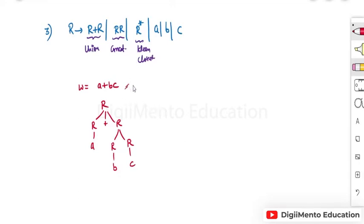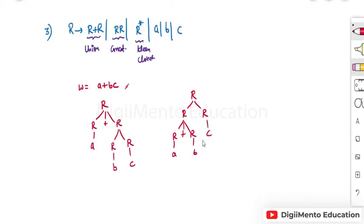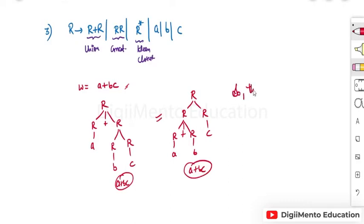If more than one parse tree exists for the same string, then this grammar is ambiguous, otherwise it is not. If we use the concatenation first and then expand it to r plus r, and again to a, b, and c, we get a plus bc again. So we are getting the same string using different parse trees — therefore this is an ambiguous grammar.